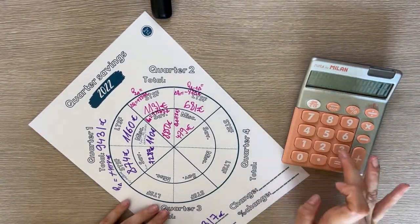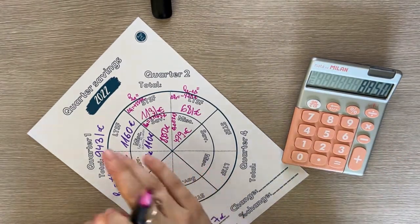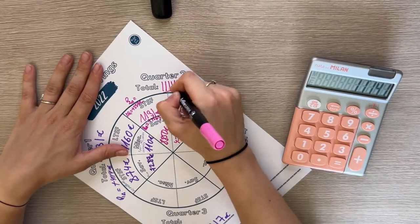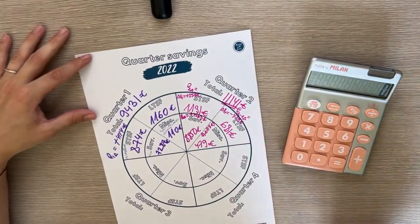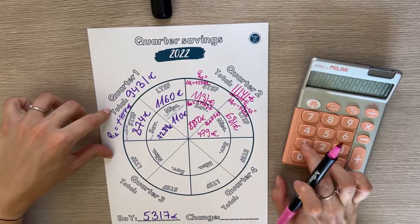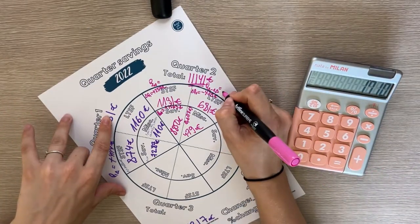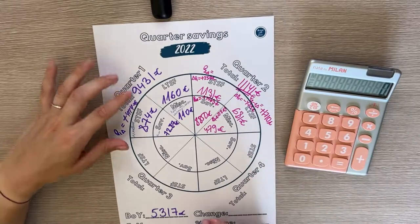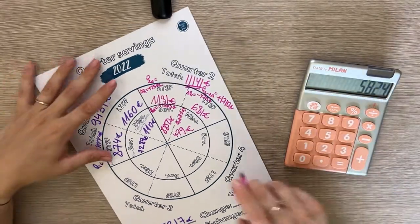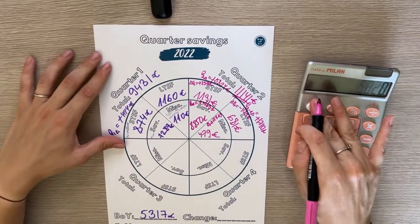Let's calculate the total and see the changes, which is the most exciting part. 1,131 plus 681 plus 479 plus 8,850, so the total for across all of my sinking funds, savings and miscellaneous for quarter two is 11,141 euros. It is a positive change. The change from the previous quarter is a positive change of 1,710 euros, and the positive change from the beginning of the year is almost 6,000 euros, plus 5,824 euros. Insane.